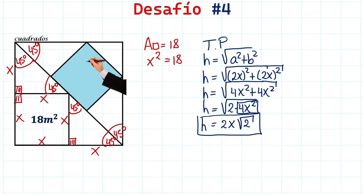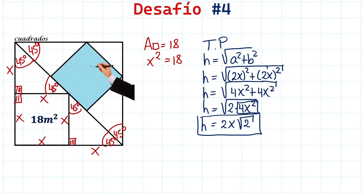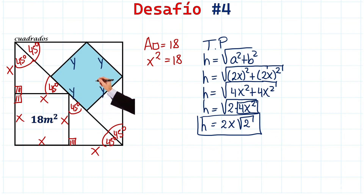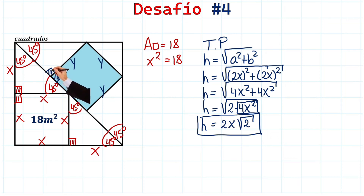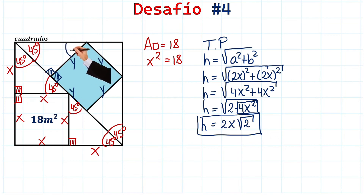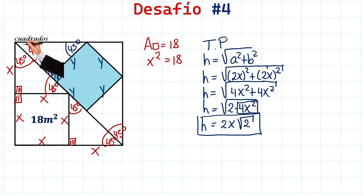Now let's label the blue square whose area we want to find. We'll call its side y, so all sides of this square are y. Here there are 90 degrees, and since we have 90 degrees and 45 degrees, we again have an isosceles triangle, so this side of the triangle is also y.